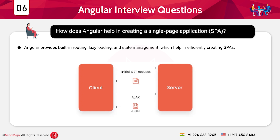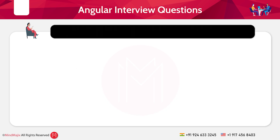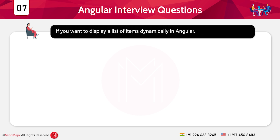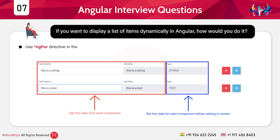The seventh question: If you want to display a list of items dynamically in Angular, how would you do it? This is a scenario-based question. You can use *ngFor directive in the template to loop through an array and render the items dynamically.